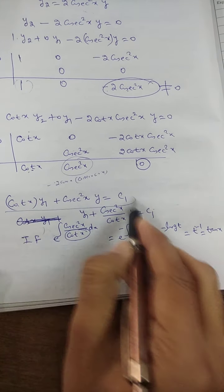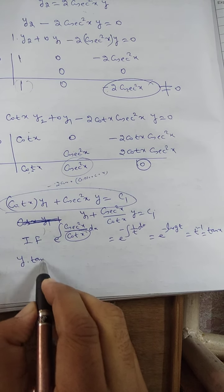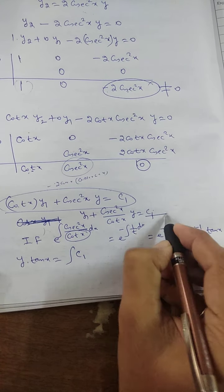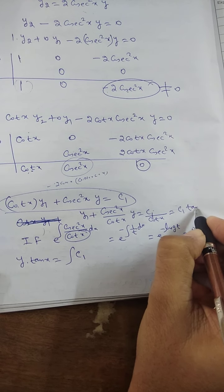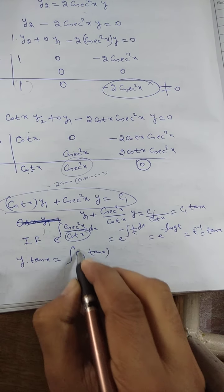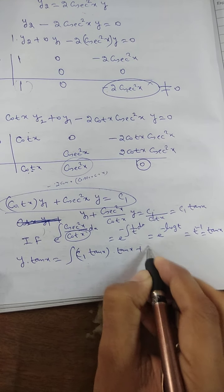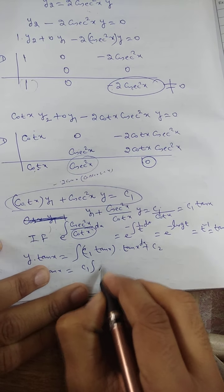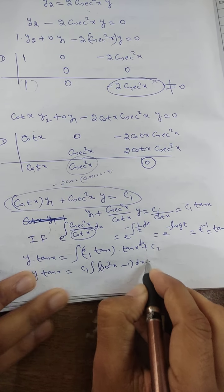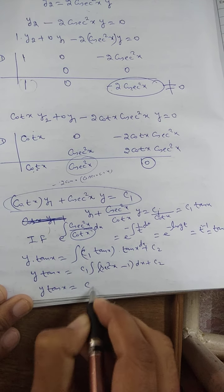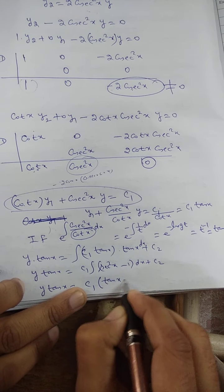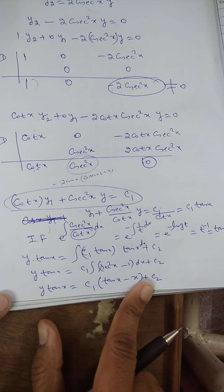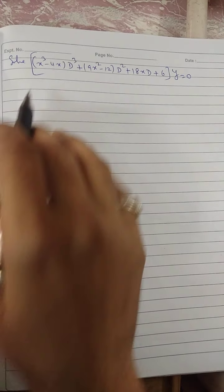The solution is y·tan x = ∫c₁·tan x · tan x dx + c₂ = c₁ ∫tan²x dx + c₂. Since tan²x = sec²x − 1, we get y·tan x = c₁(tan x − x) + c₂. This is the solution of the differential equation, which can be simplified further if desired.